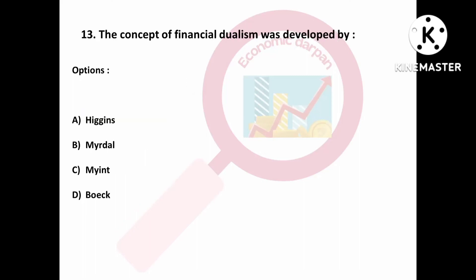Question number thirteen is: the concept of financial dualism was developed by — Option A: Higgins; Option B: Myrdal; Option C: Professor Myint; Option D: Professor Boeke. Professor Myint has developed the concept of financial dualism.